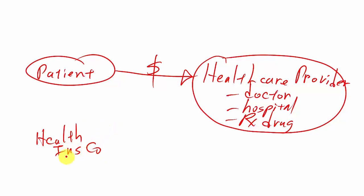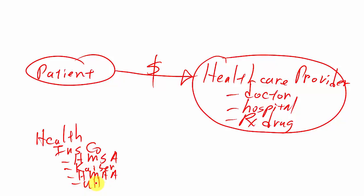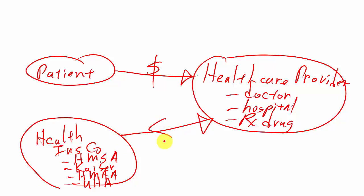Hopefully our patients are covered with health insurance through a health insurance company. Some examples here in Hawaii: the big one is called HMSA. We also have Kaiser Permanente, HMAA, and UHA. There may be other affiliates from the mainland that sell health insurance here in Hawaii. Hopefully they'll pay the bulk — the big part — of the health care costs incurred by our patient. Our patient still has to pay some of that cost, which we call a deductible or a copayment, but the bulk is hopefully paid by the health insurance company.